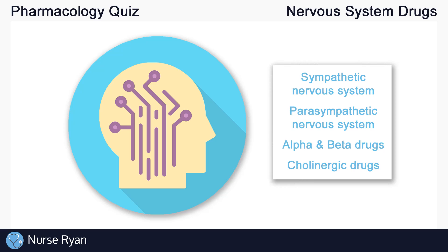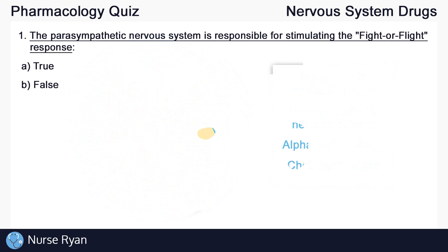In this quiz, we'll review some of the basics, including the sympathetic and parasympathetic nervous system, alpha and beta drugs, and cholinergic drugs. I'll walk you through the answers and rationales for each question, and you can use the timestamps in the video description to jump ahead.